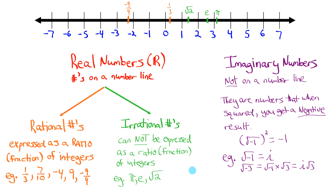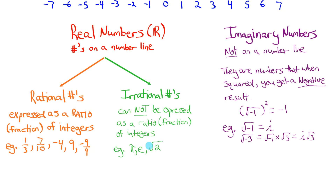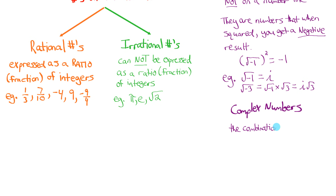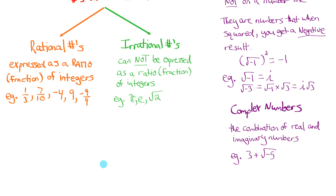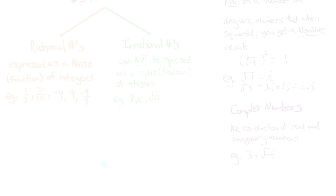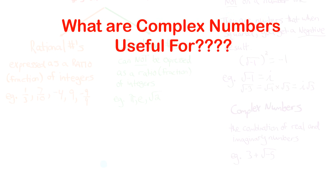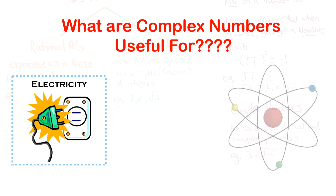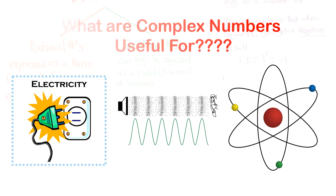You might be thinking: what are imaginary numbers useful for? They have applications when we start adding real numbers to them — we get things called complex numbers. Complex numbers are the combination of real numbers and imaginary numbers. An example would be 3 plus the square root of negative 5 — a real number plus an imaginary number. Complex numbers have practical applications in fields like electricity, quantum mechanics, and sound.